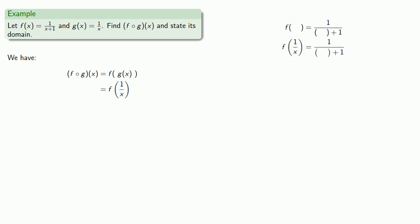So we'll put 1 over x here, as well as every other place we see an empty set of parentheses. Equals means replaceable, so f of 1 over x equals 1 over (1 over x plus 1). That gives us our composite function f of g of x.